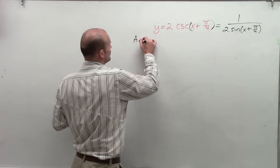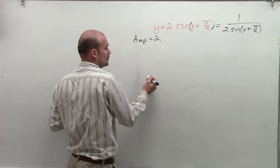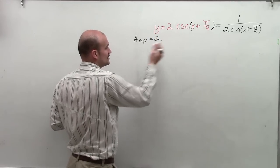So the first thing, let's go ahead and find the amplitude, which in this case is the absolute value of a, which is 2. A is my 2, absolute value of 2 is 2.